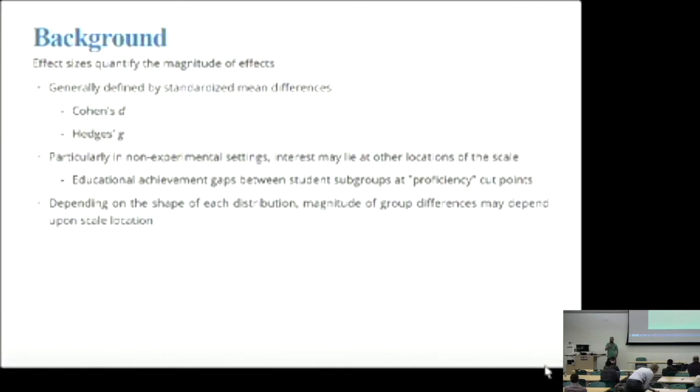Generally, effect sizes are defined primarily by mean differences. Two of the more popular ones are Cohen's D and Hedge's G. These are variants of basically the same thing. Hedge's G has a small population correction for small sample size. But particularly when you are in non-experimental designs, you might want to look at the differences between two distributions at a different point in the scale. Maybe you don't want to look at the means, maybe you want to look at the 75th percentile of each of those distributions. Also, even within experimental designs, depending on the actual shape of each distribution, the magnitude of the differences between the groups can really depend on the location of the scale.